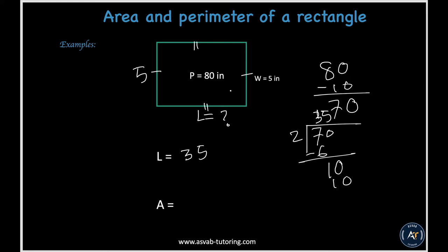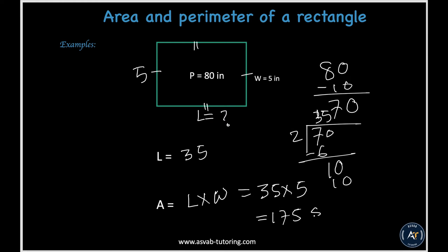Now find the area. Area equals length times width, so 35 times 5 gives you 175 square inches.